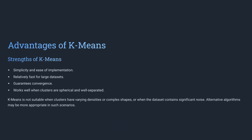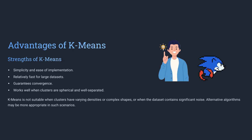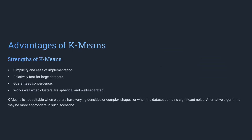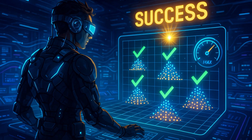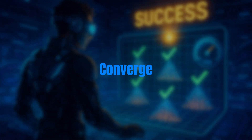K-means is popular for a reason. It's easy to understand and works fast, even with large datasets. It gives clear results when the clusters are tight and round, and it always finds a solution because it's guaranteed to converge.